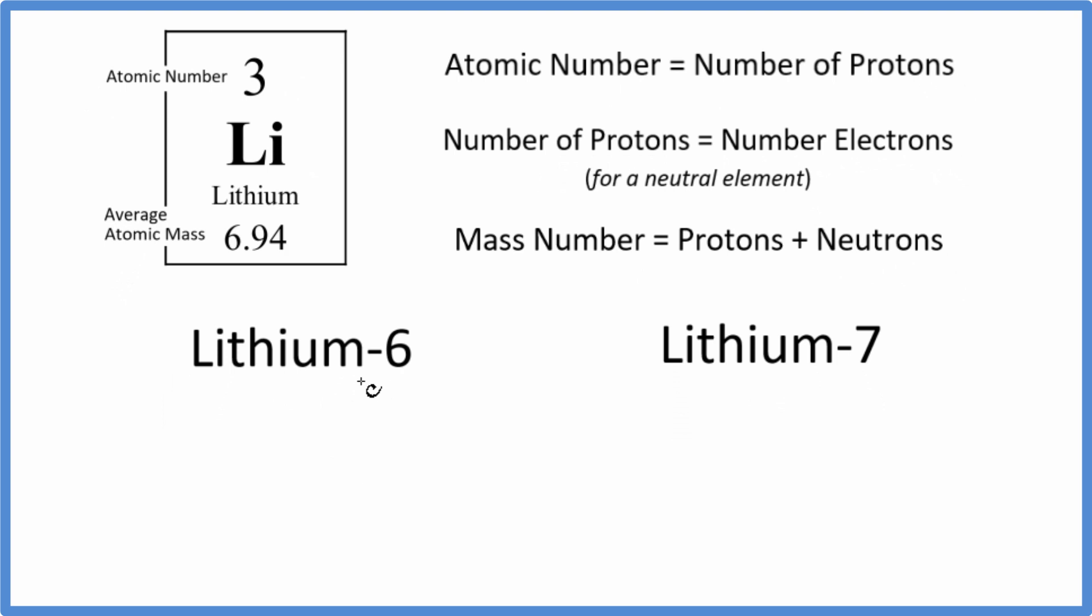So to write the nuclear notation or the isotope notation, what we'll do is take and write Li, that's the element symbol, and then we're going to put a mass number right up here from that hyphen notation. Down here, we'll put the atomic number, and sometimes you'll see the ionic charge, the charge on the element, written over here.